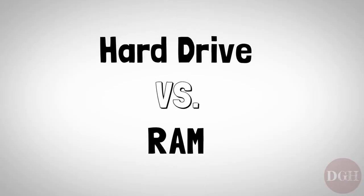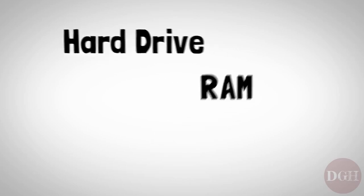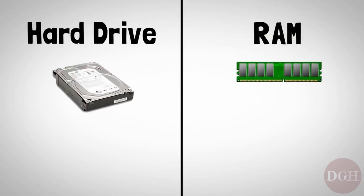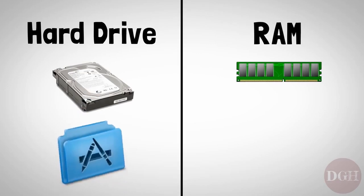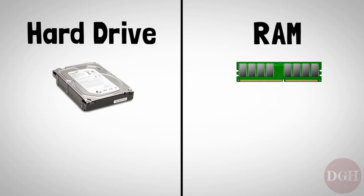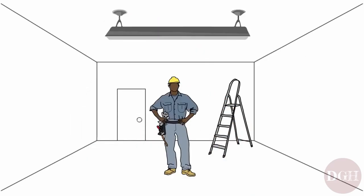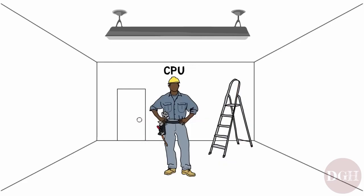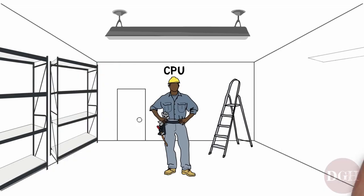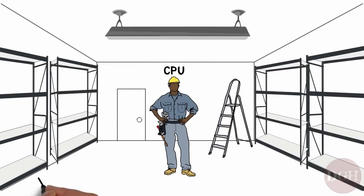Let's talk about hard drives and RAM. These are two very important components inside of a computer that are often confused with one another. In very general terms, hard drives let your computer hold more stuff — things like music, photos, videos, applications. RAM basically just makes your computer go faster. To understand in more detail, let's use an analogy. Let's say your computer is a workshop, and the CPU is the woodworker. To do any work, he needs tools and supplies, and he needs shelves to store them. The shelves are like the hard drive.